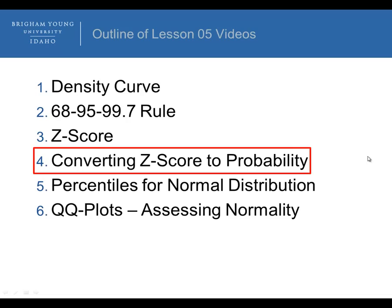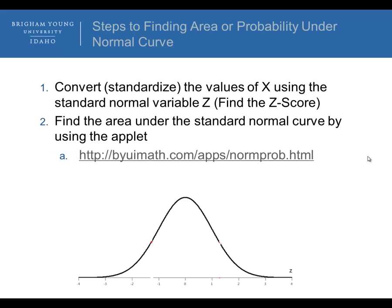Now what I'd like to do is talk about converting a z-score to probability. There are two different steps. First, we get a z-score, convert the value of x using the standard normal variable z, or find the z-score, and then find the area under the standard normal curve by using the applet, and this is the applet.